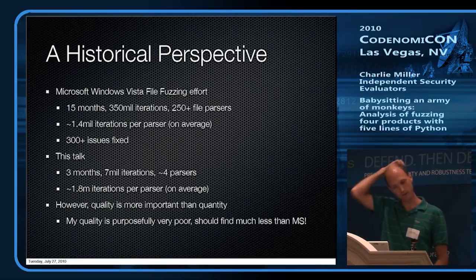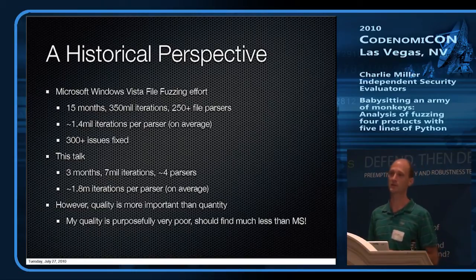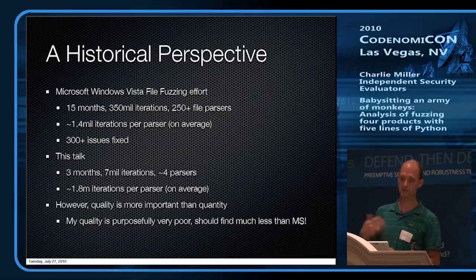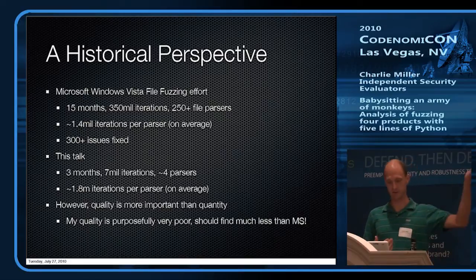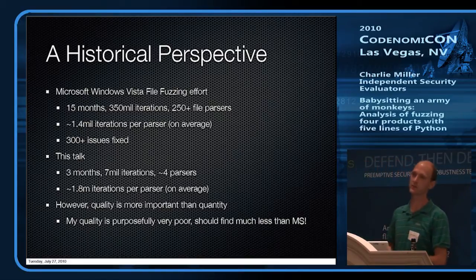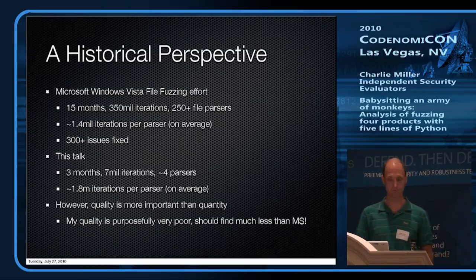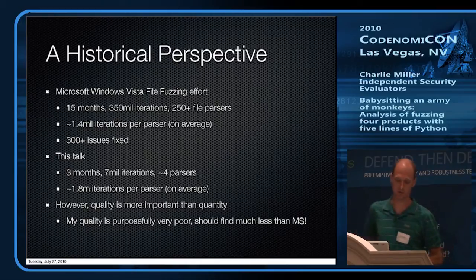Let's compare what I'm going to be talking about to what a large company like Microsoft would do. A lot of companies don't talk about what they fuzz, but Microsoft published some statistics. When Vista was rolling around a few years ago, Microsoft fuzzed for 15 months, 350 million iterations, across 250-plus file parsers — that's about 1.4 million iterations per parser. They found somewhere around 300 issues, which I assume were security issues.